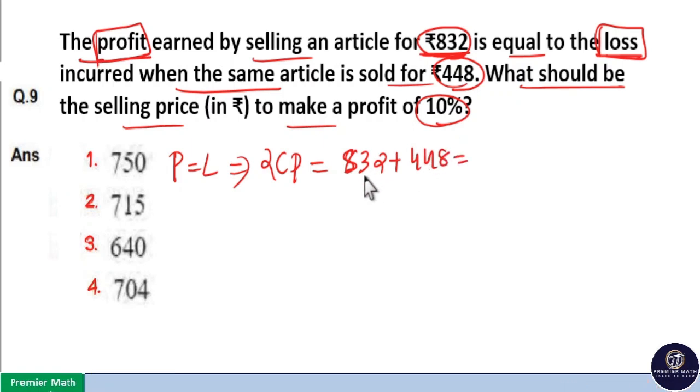...to 48 plus 32 is 80, 800 plus 400 is 1200, so 1280. Then CP, that is cost price, is equal to 640 rupees.